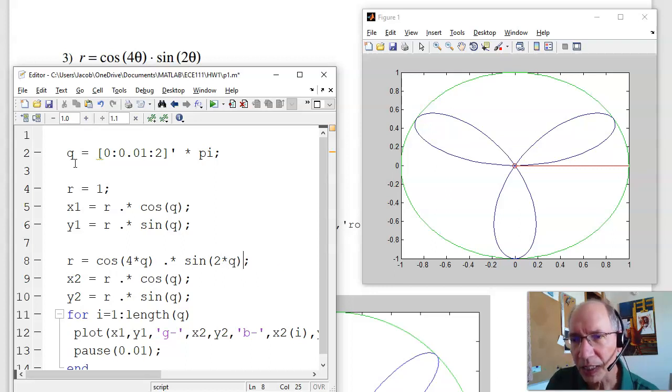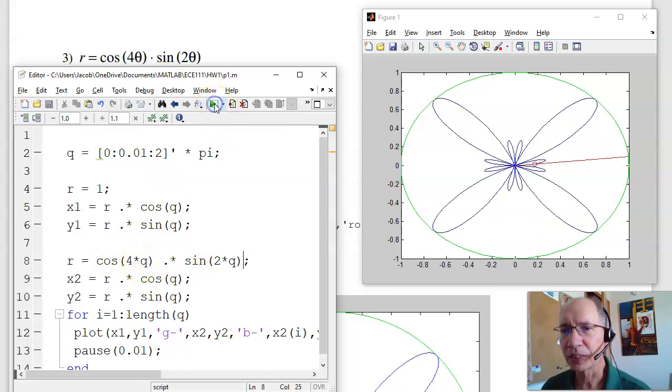Again, I've got to use the dot times. Theta is a 200 by one vector. I can't do a matrix multiply, but I can do element by element multiplication. So in this case, if I plot cosine(4θ)*sin(2θ), here's what I get. Kind of a pretty shape.